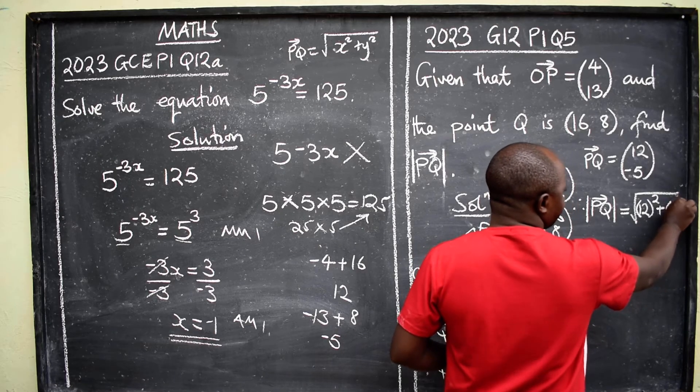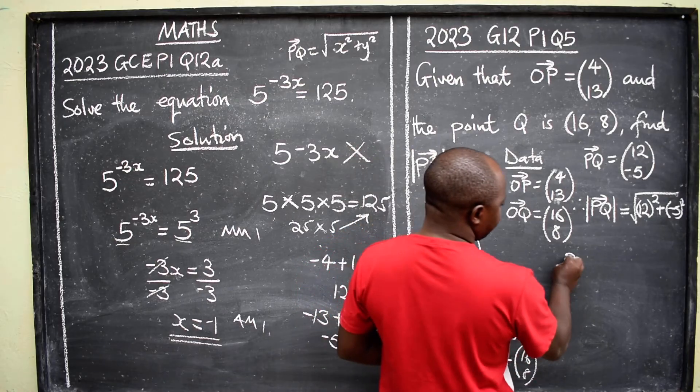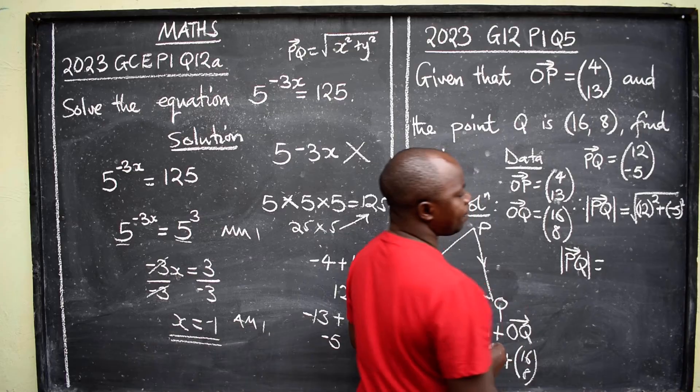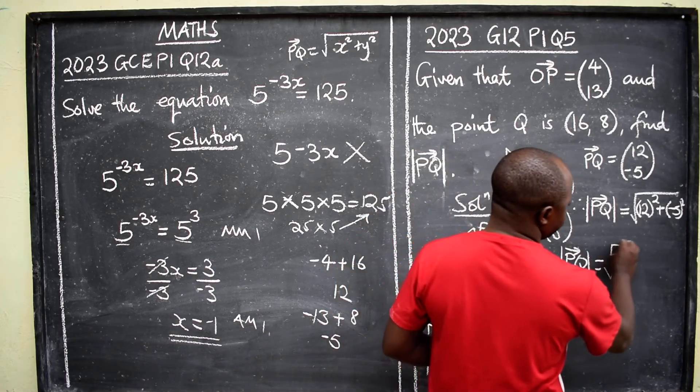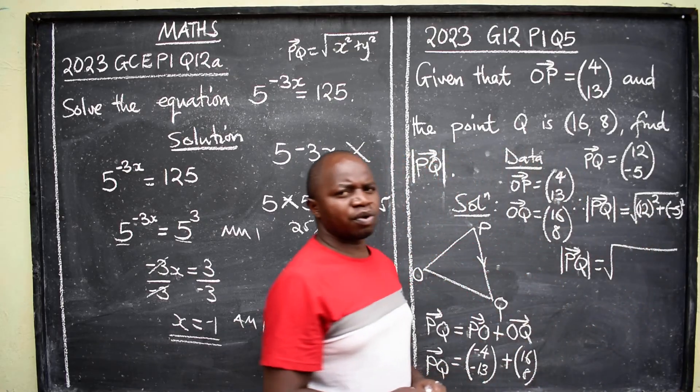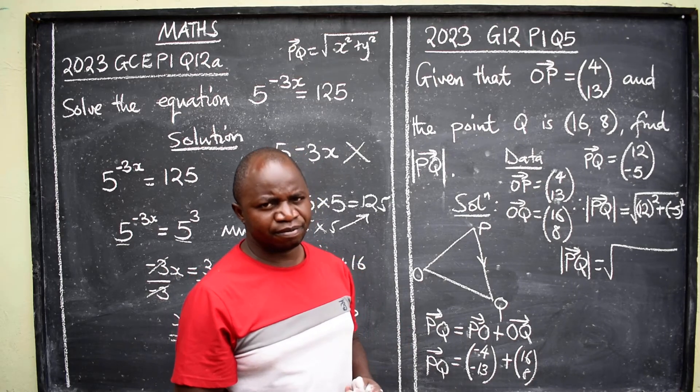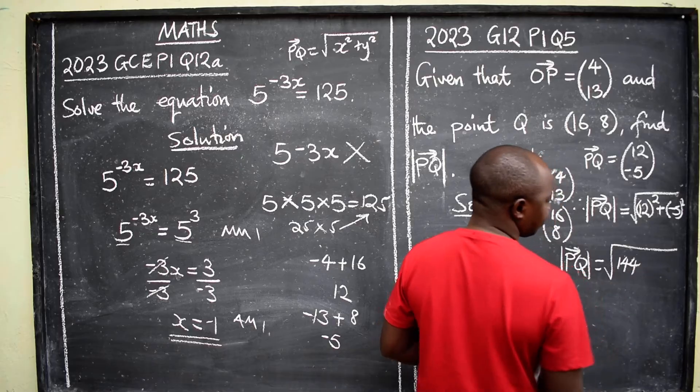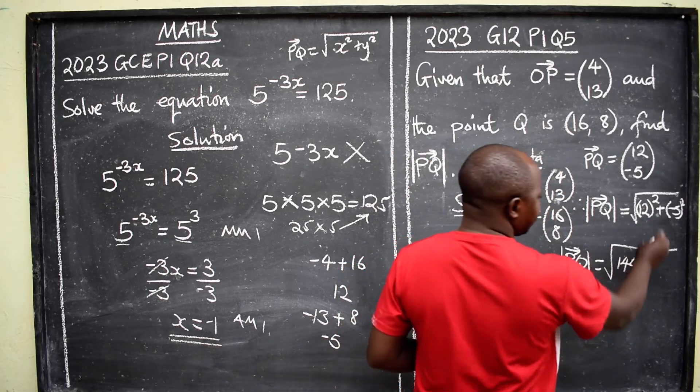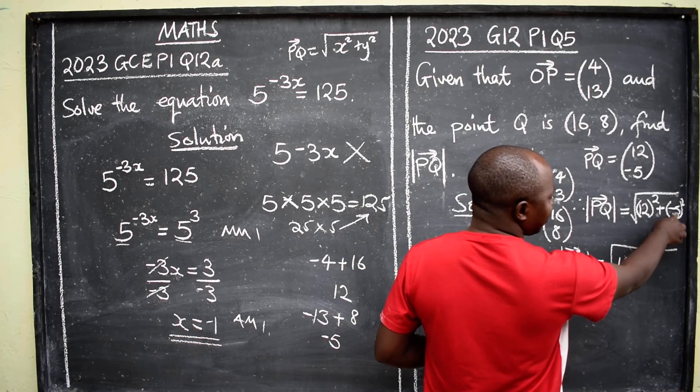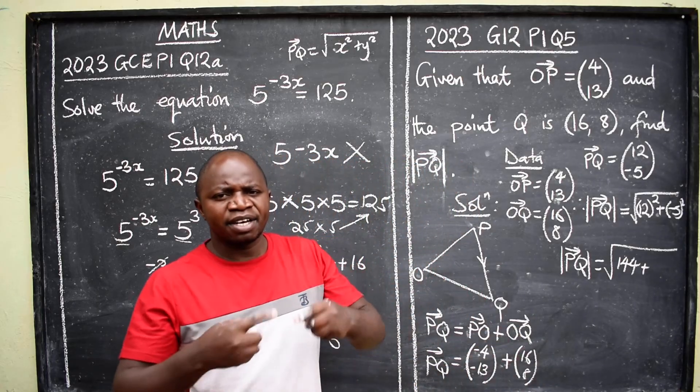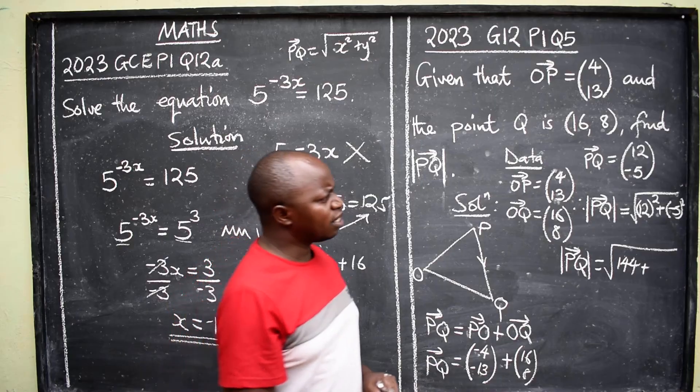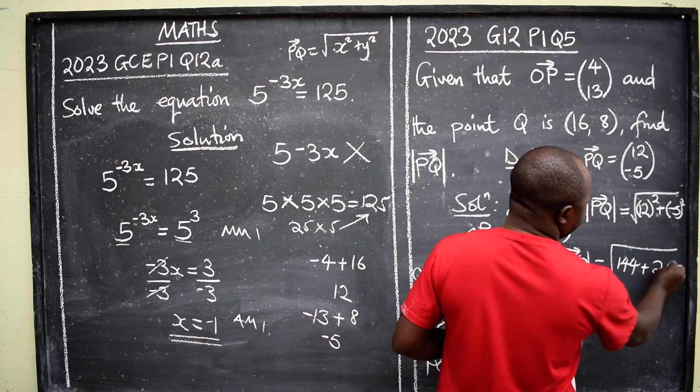Further, we are going to say PQ magnitude will be equal to square root. What is 12 squared? That is 12 times 12, and that will be 144. Plus here, it's negative 5 squared, meaning negative 5 times negative 5, that will give us 25. So we have 25 here.